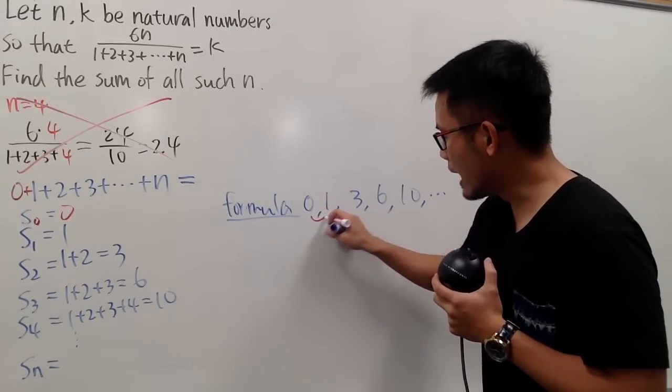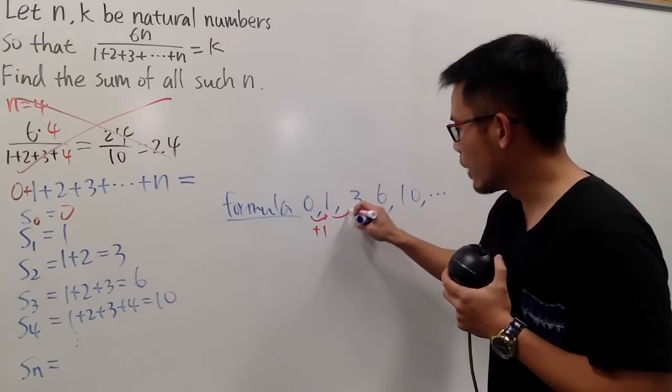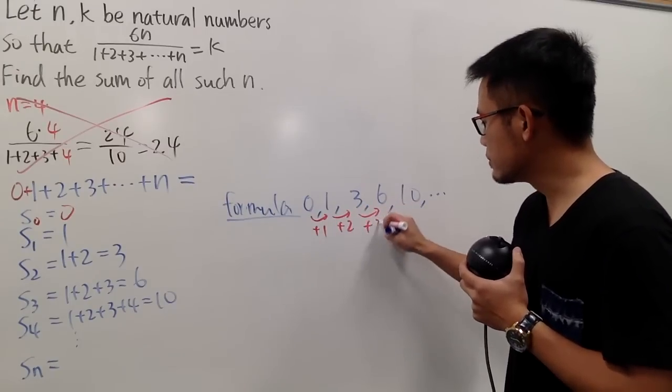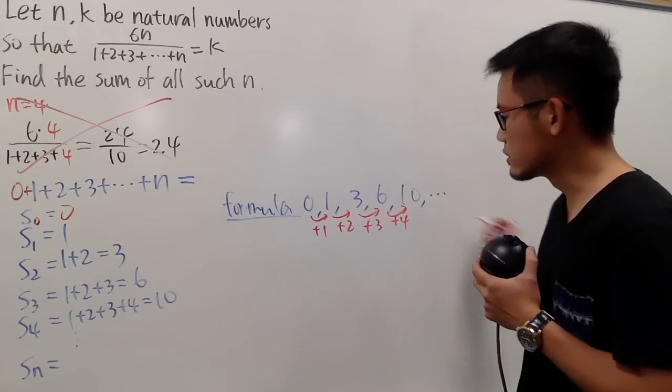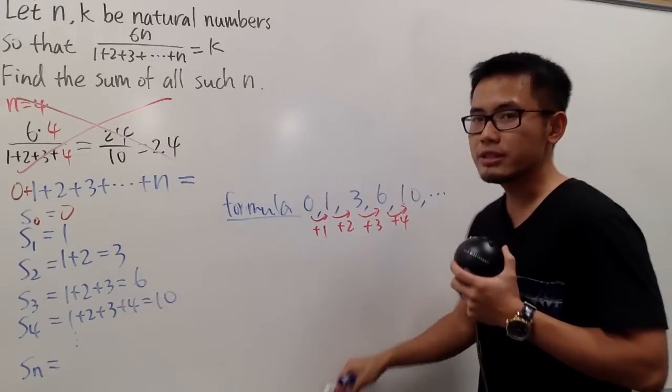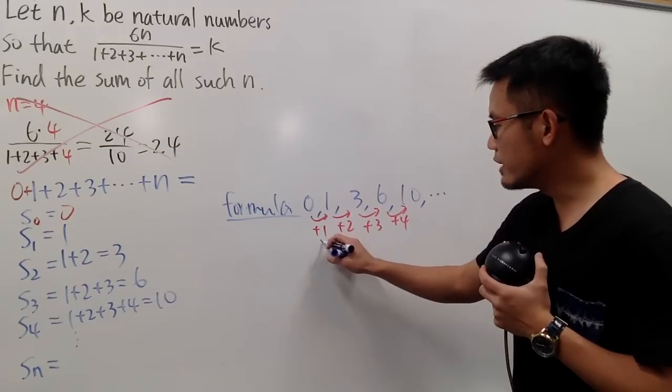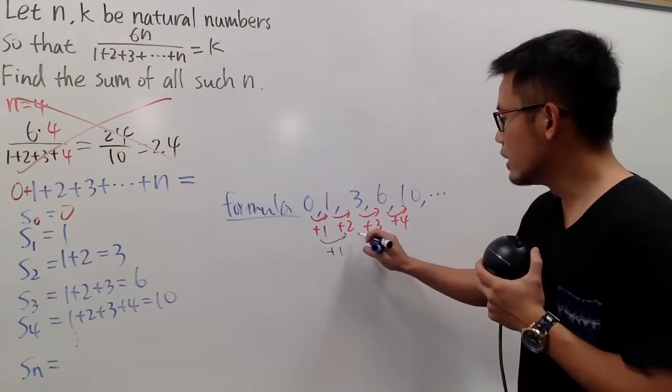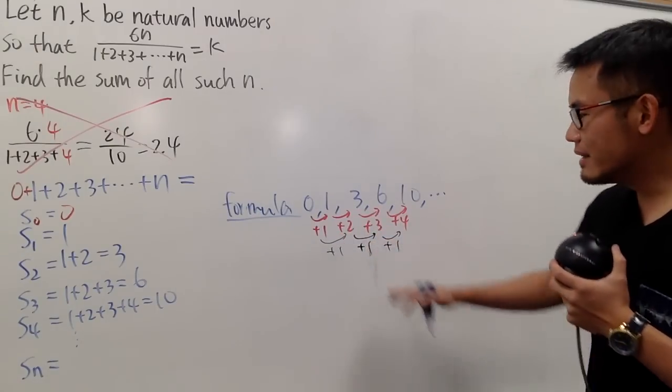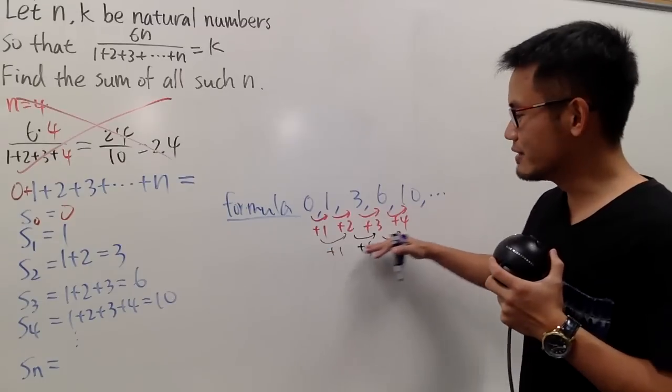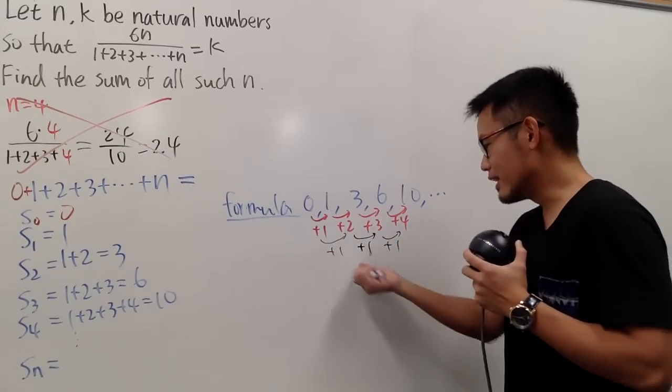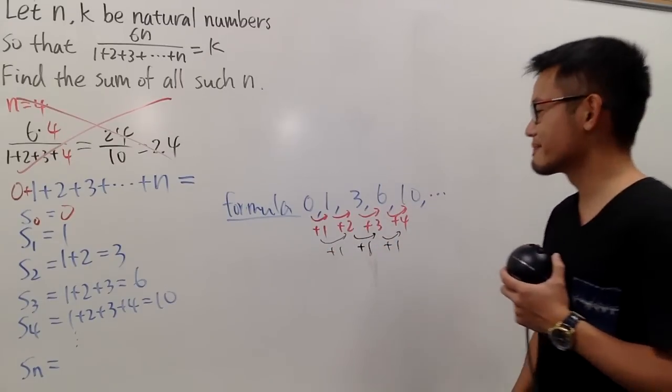From 0 to 1, this is plus 1. And from 1 to 3, this is plus 2. From 3 to 6, it's plus 3, and then plus 4, and so on. These numbers are not the same yet, but we can do it again. If you look at the difference between 1 and 2, this is plus 1. From 2 to 3, it's plus 1, and so on. And the moment that you see the differences are the same already, you can stop, because the next one is just plus 0 anyways.